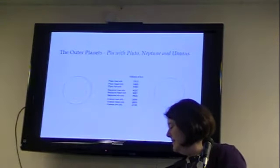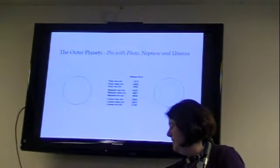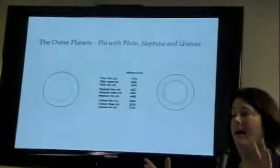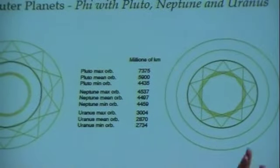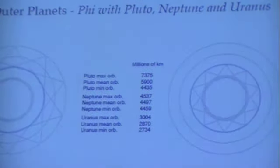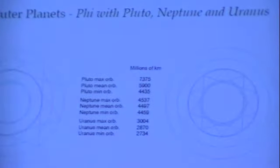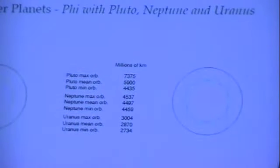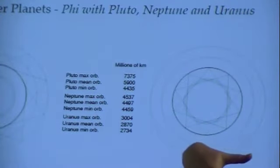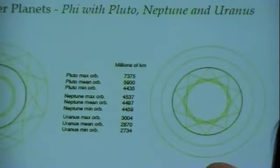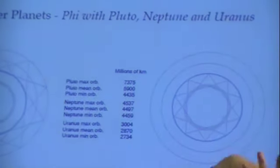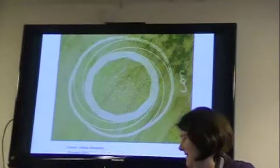And then the outer planets, Pluto, Neptune, and Uranus have this relationship of a double pentagram, a decagon. Deca meaning ten, like decade. They have a relationship to each other according to this double pentagram. Actually, interfolded the same way the hexagram is interfolded. You can do stars interfolded like that.